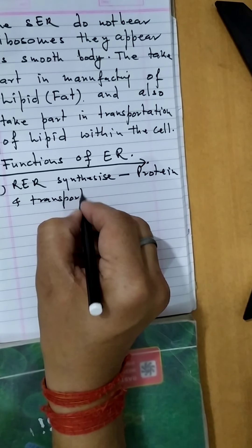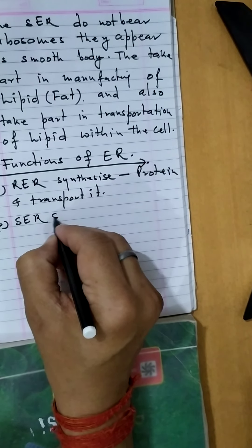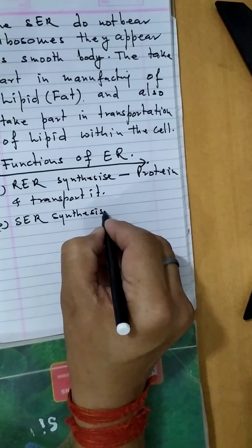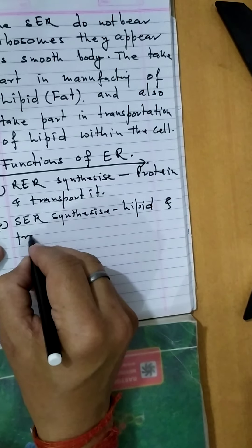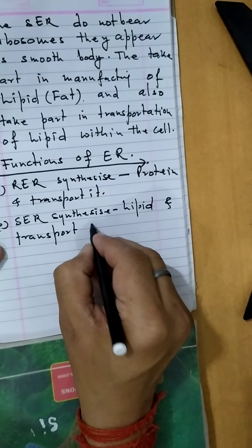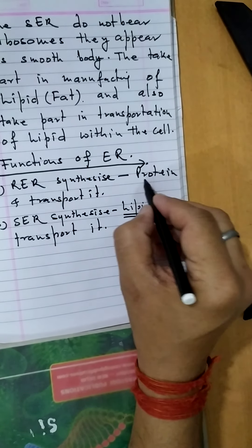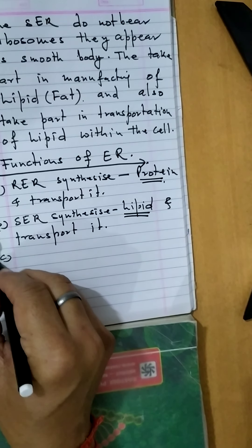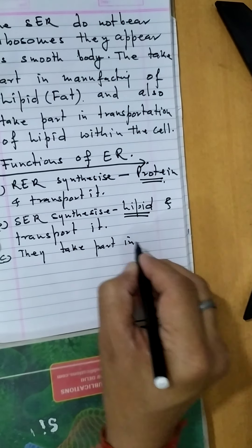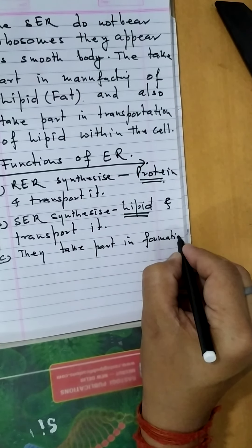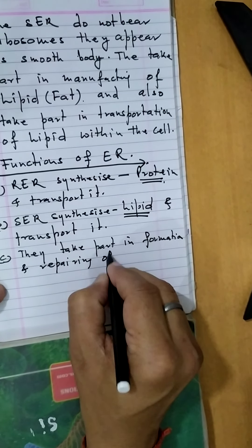Functions of Endoplasmic Reticulum. The first function: the RER synthesizes protein and transports it. The SER synthesizes lipid and transports it.